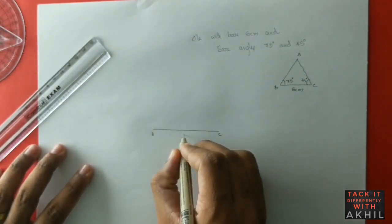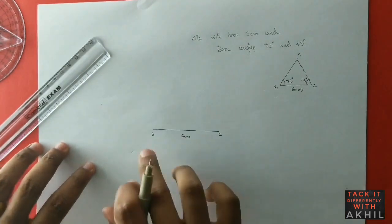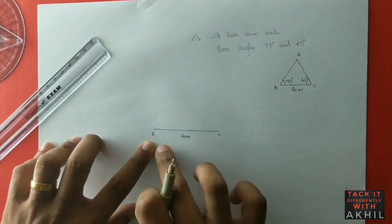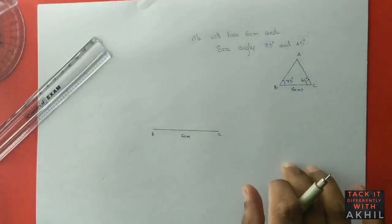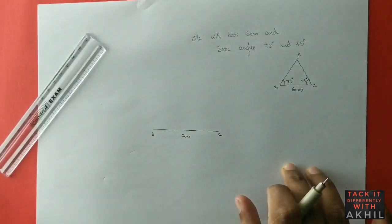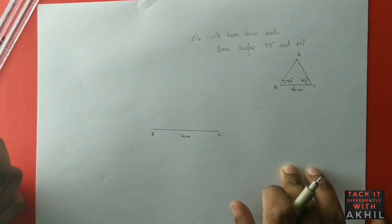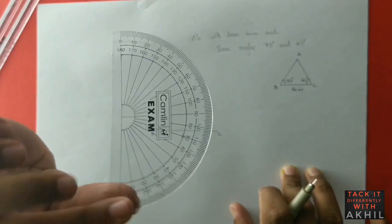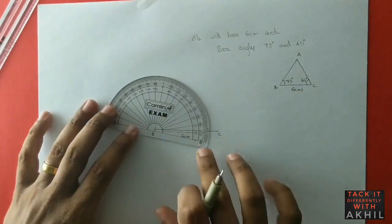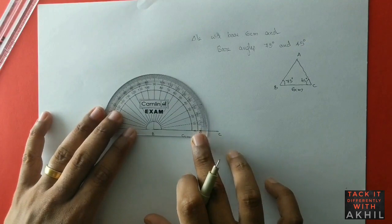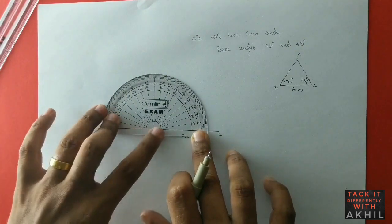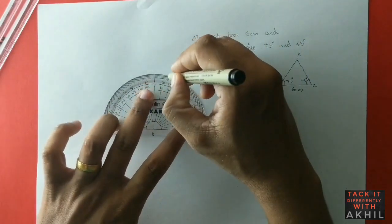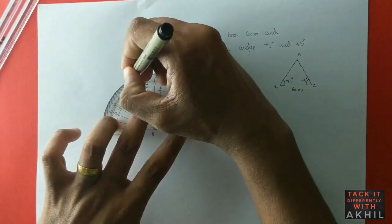In the rough diagram, I have marked angle B as 75 degrees, giving us line segment BC equal to 6 centimeters. To construct a 75 degree angle, you need to mark 60 degrees, 75 degrees, 90 degrees, and 120 degrees using the protractor. Take out your protractor — Camelin is the best, don't go for any fancy geometry box. Using the protractor, mark the points for 60, 75, 90, and 120 degrees.